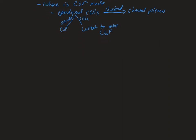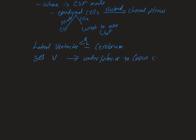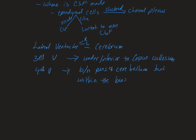In terms of locations, you had that on the previous slide. The two lateral ventricles will be found in each cerebral hemisphere — a right and a left. The third ventricle is going to be inferior to the corpus callosum. And then the fourth ventricle is going to be between the pons and the cerebellum, within the brainstem — so it's not actually part of the cerebellum, it's within the brainstem.